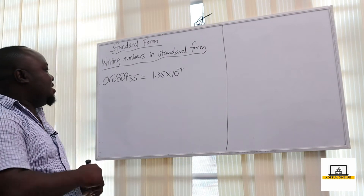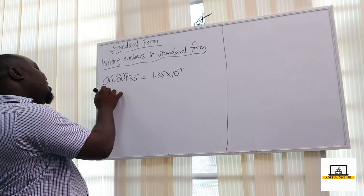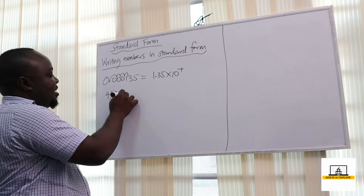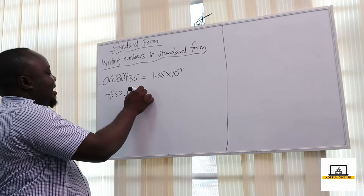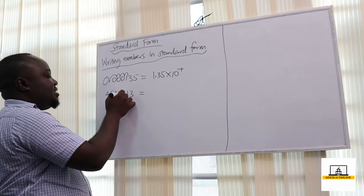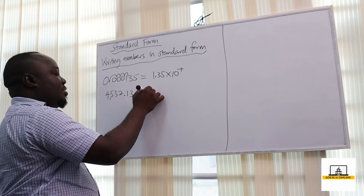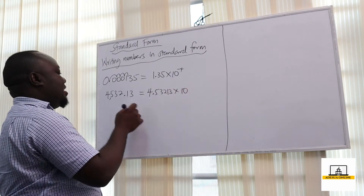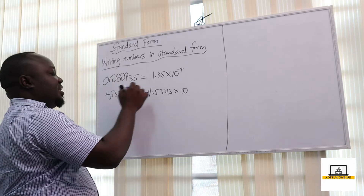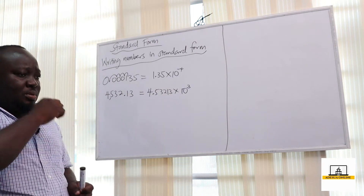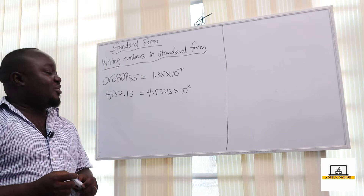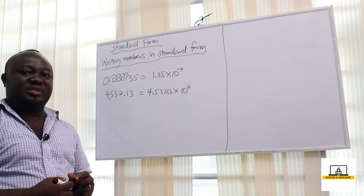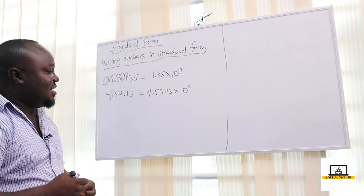So moving from left to right we have a negative index. If I have 4532.13 and I want to write this in standard form, this becomes 4.53213 times 10 raised to the power positive 3, because we are moving from right to left — we have a positive index.